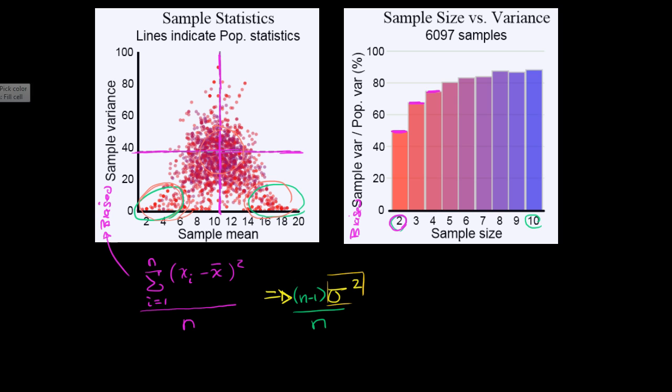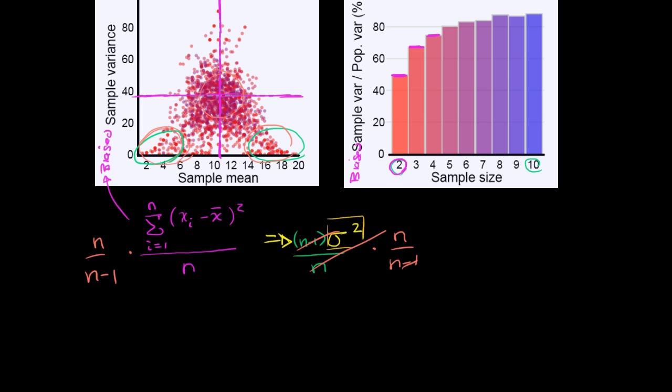let me do this in a color I haven't used yet, we would want to multiply times n over n minus one. We would want to multiply n over n minus one to get an unbiased estimate. Here, these cancel out, and you are just left with your population variance.